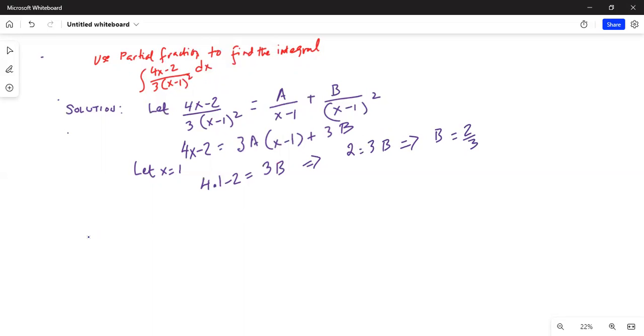To solve for A, let x equal to 2. Then 4 times 2 minus 2 equals 3A times (2 minus 1) plus 3B.